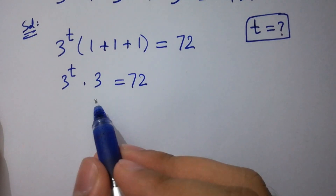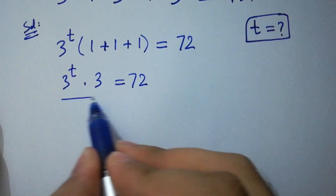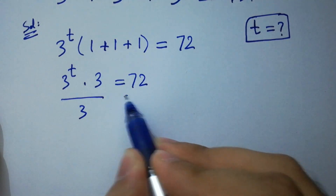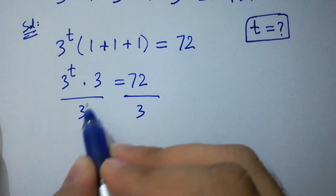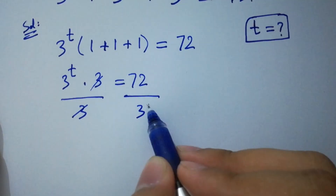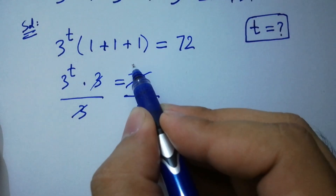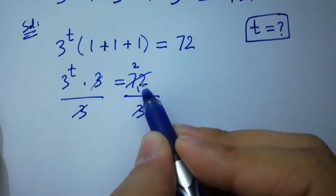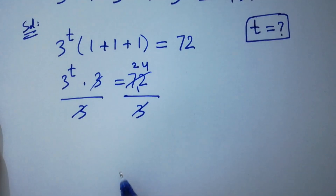To cancel this 3, divide by 3 on both sides. 3 and 3 cancel, and 72 divided by 3: 3 times 2 is 6, remainder 1, 3 times 4 is 12, giving 24.